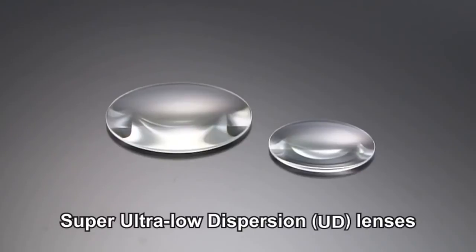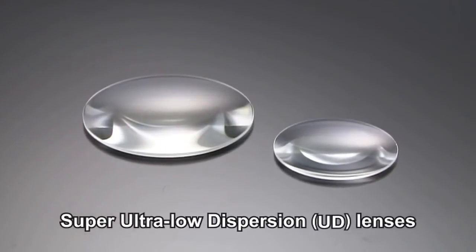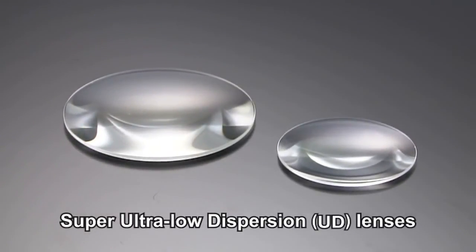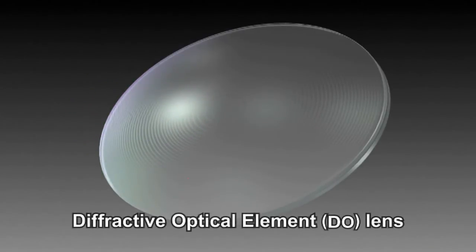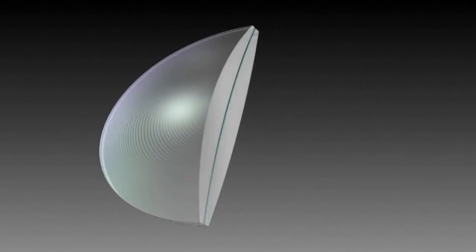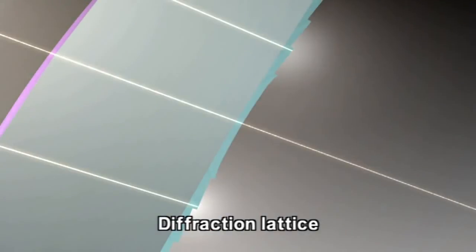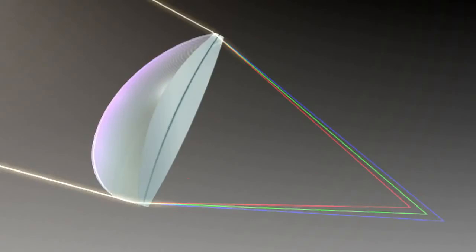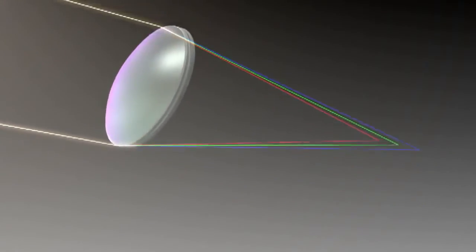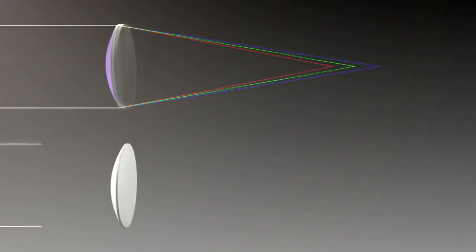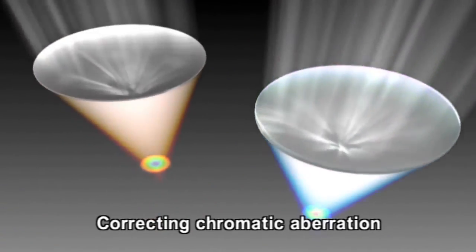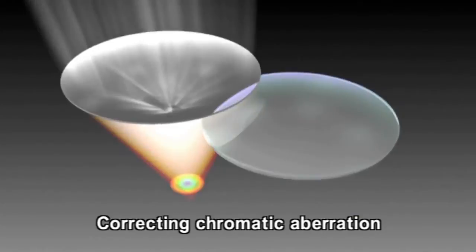We have also successfully commercialized super-UD lenses, which have optical characteristics similar to fluorite. In addition, Canon has also developed a revolutionary DO lens using diffractive optical elements. By creating a diffraction lattice, which was once considered impossible, Canon developed a DO lens that generates chromatic aberration in perfect contrast to convex lenses. Chromatic aberration can thus be corrected by pairing a DO lens with a conventional lens.